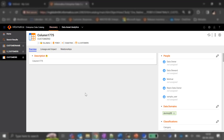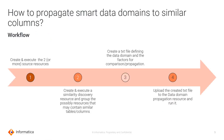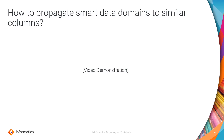Now that we have learned how to tag smart data domains to a column or any object on EDC catalog, let us learn how to propagate. This slide contains a simple workflow explaining how to propagate smart data domains to similar columns. The first step involves creating and executing two or more source resources. The second step is to create and execute a similarity discovery resource and group resources that may contain similar tables or columns. The third step involves creation of a text file defining the data domain and the factors for comparison or propagation. The final step involves uploading the created text file to the data domain propagation resource in the LDM admin and running it.